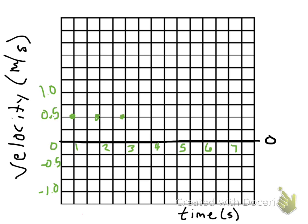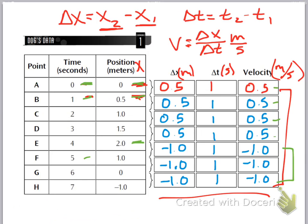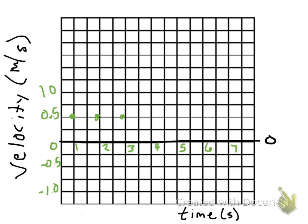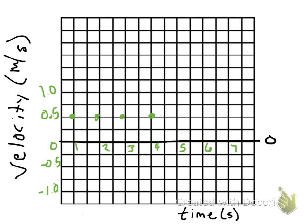We have four of those 0.5 values plotted. And then all of a sudden it changes — now it's at negative 1 for the rest of the time. So between 4 and 5 it's at negative 1 down here. Between 5 and 6 it's at negative 1. Between 6 and 7 it's at negative 1.